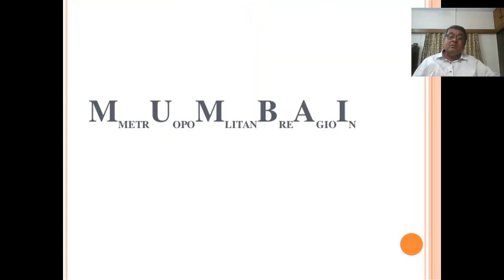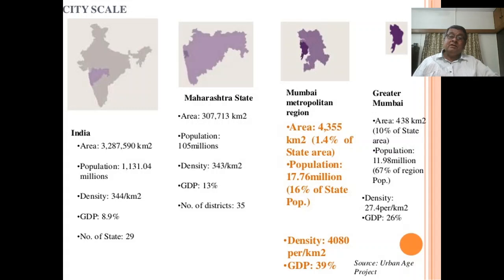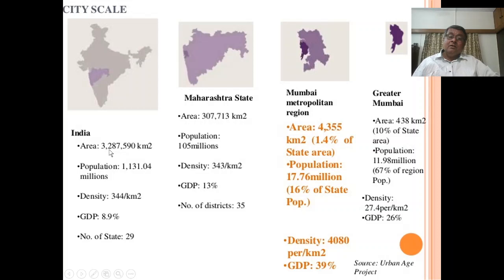Now let's see MMRDA — the Mumbai Metropolitan Regional Development Authority. Comparing area with India and Maharashtra: the area of India is about 32 lakh 87 thousand 590 square kilometers; Maharashtra's area is 3 lakh 7,713 square kilometers; and the Mumbai Metropolitan Region's area is 4,355 square kilometers.